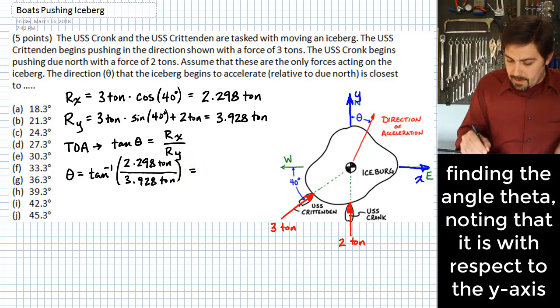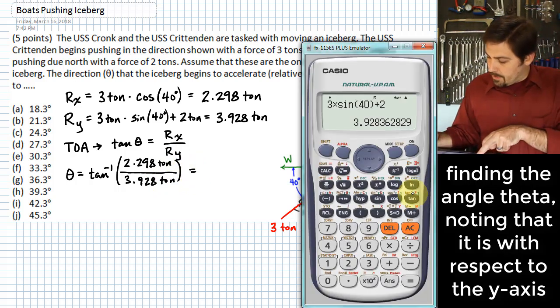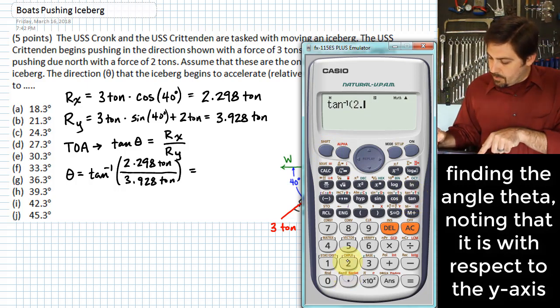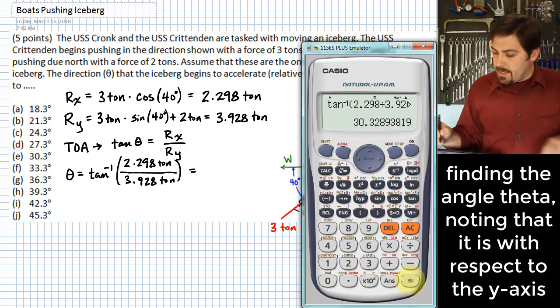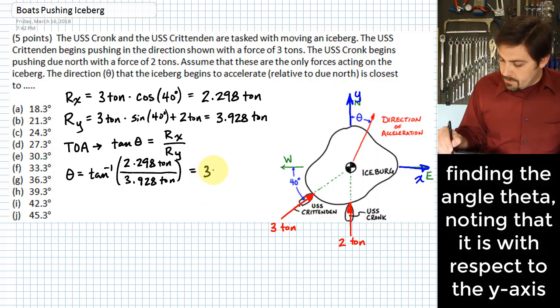So what I'll do here is do that inverse tangent: 2.298 divided by 3.928. And that gives me 30.3 or so degrees.